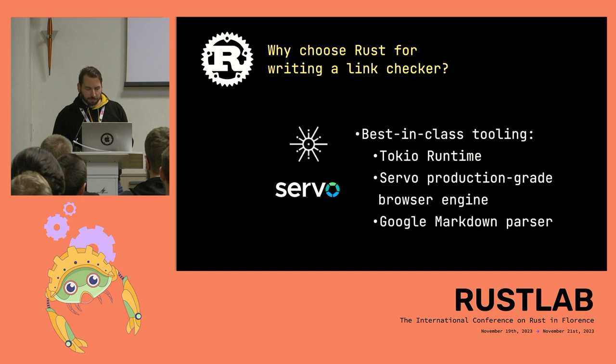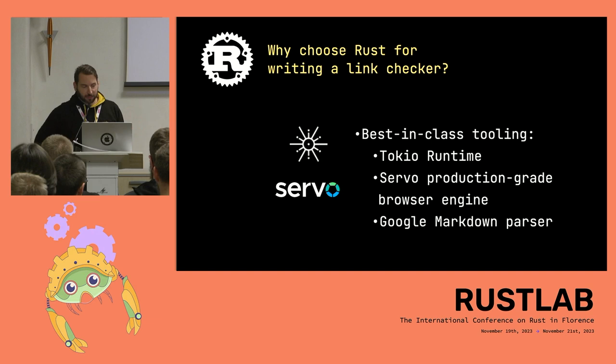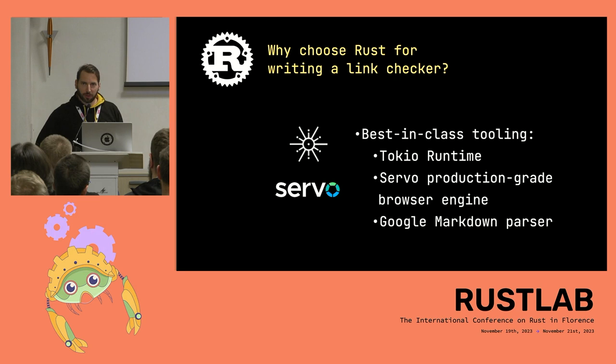Similarly, Lychee uses Tokio, which is a runtime. In Rust you can use futures — asynchronous tasks that get executed at some point — and you can run a lot of these tasks concurrently. That allows you to fill out network card requests without really doing much work, and that's exactly what we do. Lychee uses the Tokio ecosystem very heavily. There's also a markdown parser that was initially created by Ref — it's one of the most amazing markdown parsers out there, and Lychee uses it too.